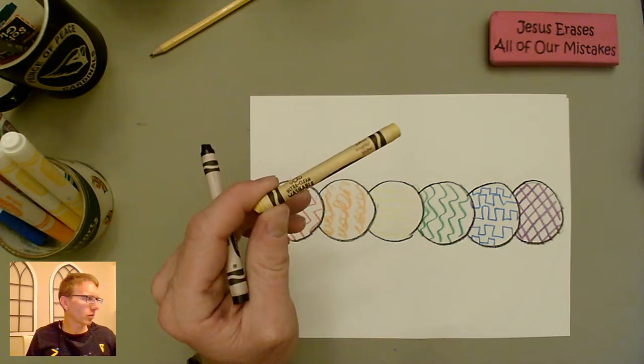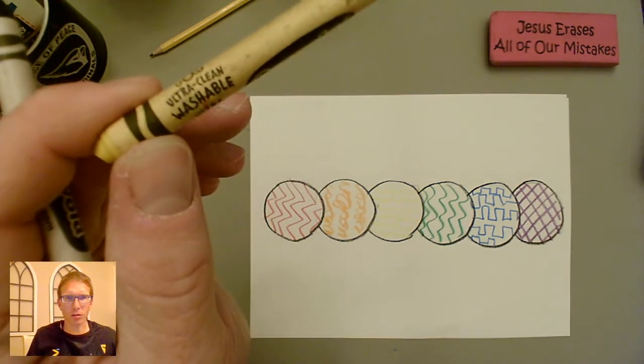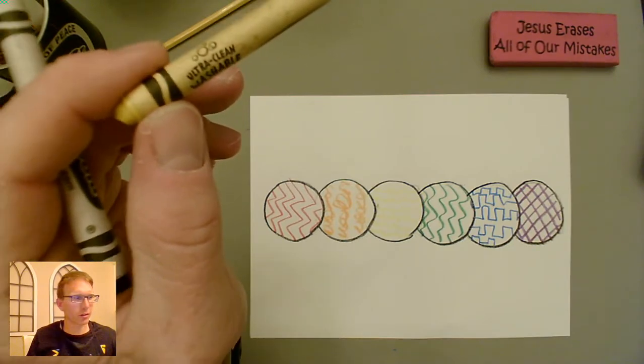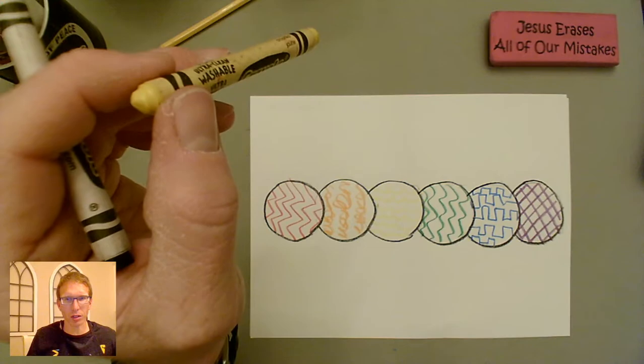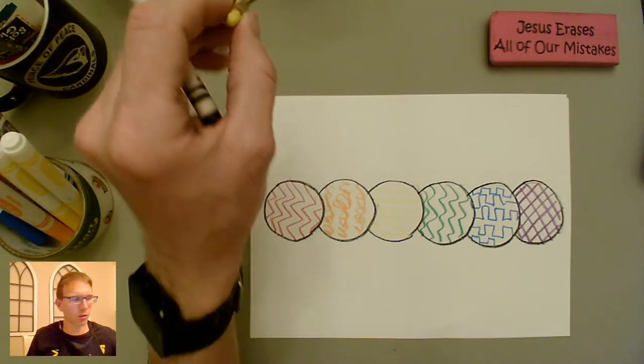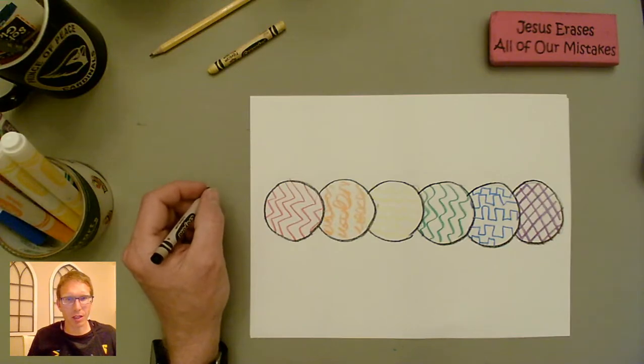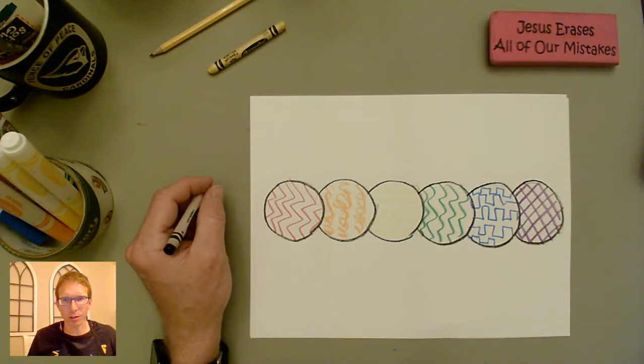If your crayon says ultra clean washable, then it's not going to be as good for this resist part as the other ones are, just a regular Crayola crayon. So keep that in mind if you try this and it doesn't seem to be working as well. That might be the problem with your crayons. So we're going to make sure we trace all around those.